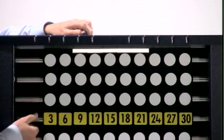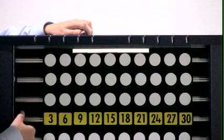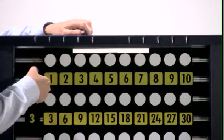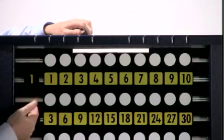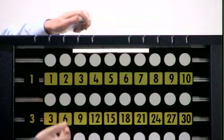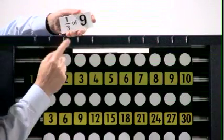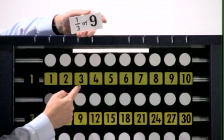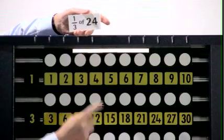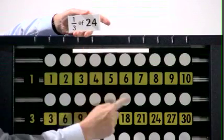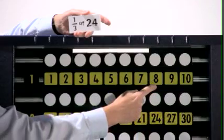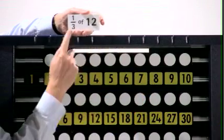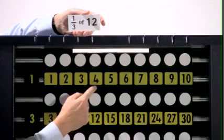Here's the three times table, here's the one times table — we can find our thirds. One third of nine is three, one third of twenty-four is eight, one third of twelve is four.